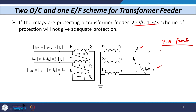On the delta side, the capital IR is 0, and IY and IB flow in opposite directions. If I calculate IRY = IR − IY, since IR is 0, we have only IY in magnitude. For IYB = IY − IB, since IY and IB are in opposition, the current is 2IY. Similarly, IBR = IB − IR, and since IR is 0, we have only IY.